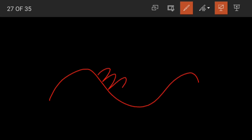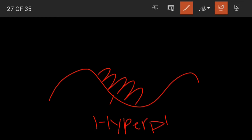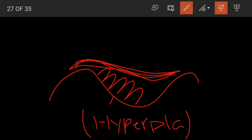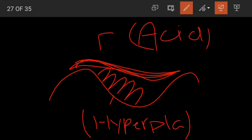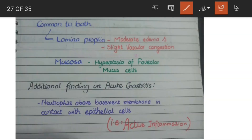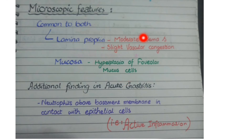In the mucosa, the foveolar mucous cells undergo hyperplasia as a protective response. These hyperplastic foveolar mucous cells release more mucus, which protects the stomach lining from acid-rich secretions. So as a protective mechanism against cell damage, there is hyperplasia of foveolar mucous cells. These two features — lamina propria edema with vascular congestion, and foveolar mucous cell hyperplasia — are common to both gastropathy and gastritis.